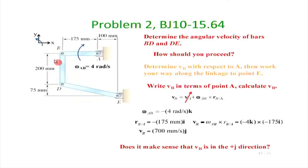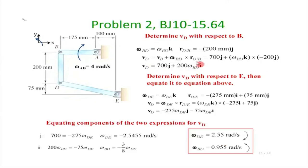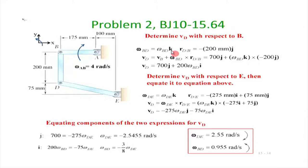Now we want to find the rotation of rod BD. Let us say omega_BD as a vector equals the magnitude of omega_BD times k-hat, where anticlockwise is positive and clockwise makes omega_BD negative. The position vector of D with respect to B — with x to the right and y upward — is simply minus 200j, since D is directly below B. The j-hat is the unit vector along the y direction.